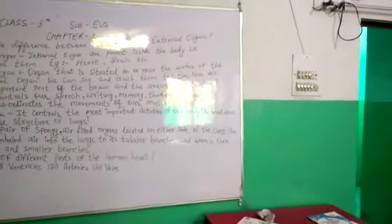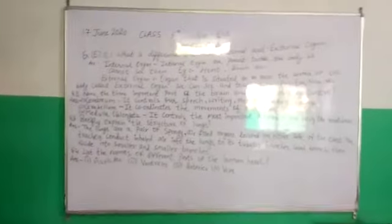Question number 3. Briefly explain the structure of lungs. The lungs are a pair of spongy, air-filled organs located on either side of the chest. The trachea conducts inhaled air into the lungs to its tubular branches called bronchi, which then divide into smaller and smaller branches.